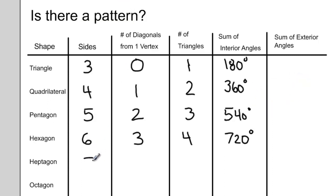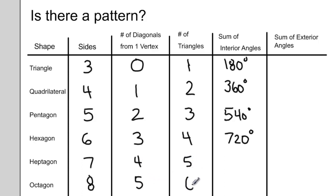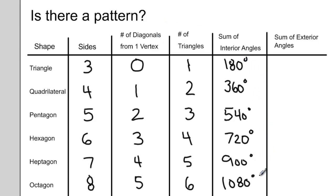Do you think you could fill in the rest of the chart with this information following our patterns? Heptagons have seven sides. Octagons have eight sides. If we were to draw them, we could connect one vertex to other vertices with four and five diagonal lines, creating five and six triangles. And our interior angles would be 900 degrees and 1,080 degrees. So our interior angles go up by 180 degrees each time.